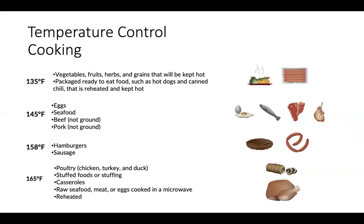Cooking. It is important that proper temperatures are used when cooking food. Different foods have different temperatures that they need to be cooked to, known as the final cook temperature. Vegetables, fruits, herbs, and grains that will be held hot; packaged and ready-to-eat foods such as hot dogs or canned chili need to be cooked to 135 degrees. Eggs, seafood, whole beef or whole pork need to be cooked to 145 degrees. Ground meats such as hamburgers and sausage need to be cooked to 158 degrees. Poultry such as chicken, turkey or duck; stuffed foods or stuffing; casseroles; raw meat, seafood or eggs cooked in a microwave; or any item that is reheated needs to be cooked to 165 degrees.